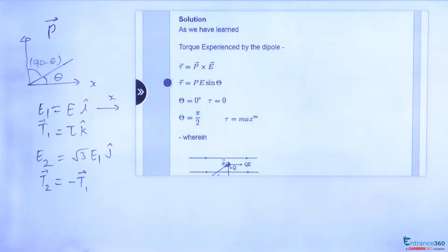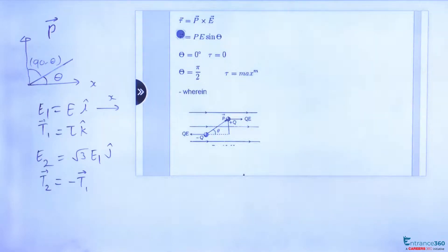To solve the question we must understand the concept involved. After reading the question, we should apply this concept which is torque experienced by the dipole, given by τ equals P cross E, or it can also be written as PE sin theta.